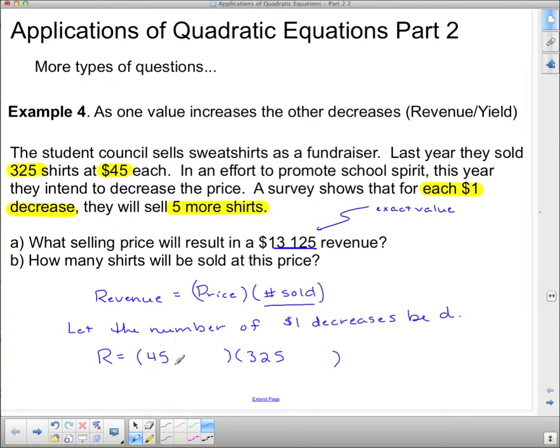Now we have revenue equals the price times the number sold. So for the price, it starts at $45. For the number sold, it starts at 325. What's happening to the price? They're decreasing it by $1, but they might do it twice, three times, four times. We don't know. So we have to put a D there. For the 325, they're going to sell five more shirts every time we decrease it by $1. So there's our equation.